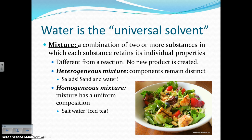A homogeneous mixture means the mixture has a uniform composition — it's completely blended and cannot be unblended without some sort of reaction. An example would be salt water, which won't settle, or iced tea, where you can't take the tea back out of the water once it's mixed.